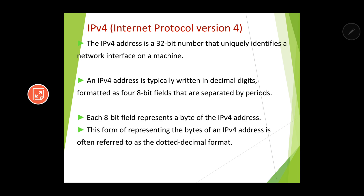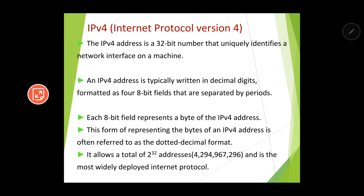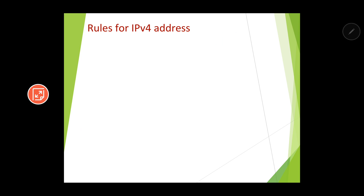This form of representing the bytes of an IPv4 address is called the dotted decimal format. Remember: IPv4 uses dotted decimal format, while IPv6 uses colon format. IPv4 allows a total of 2^32 addresses, making it the most widely deployed internet protocol — meaning that many devices can be supported under the IPv4 addressing scheme.